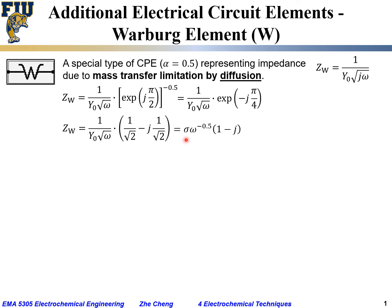Sometimes people introduce the parameter sigma and rewrite the impedance as σ·ω^(−0.5) times (1 − j). This is the impedance in real versus imaginary format for the Warburg element. It is a special CPE with exponent 0.5, representing impedance related to mass transfer limited by diffusion.